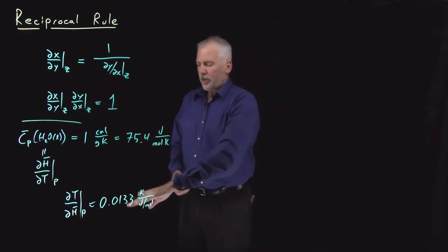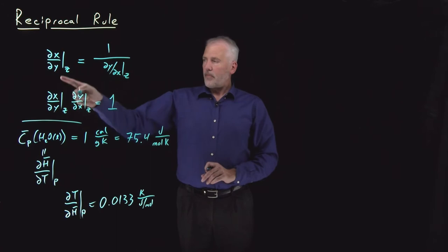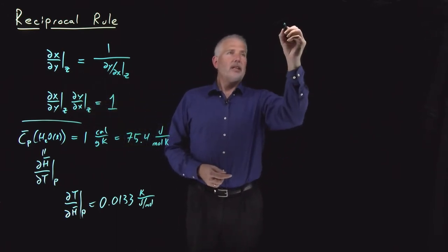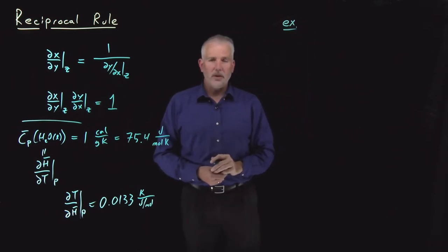Again, fairly straightforward. Turn a derivative upside down, and the value of it is the reciprocal. We can use that to derive relationships between thermodynamic variables.